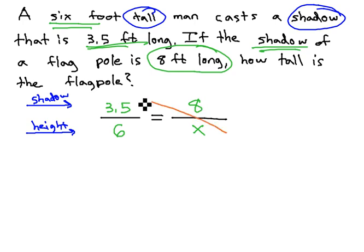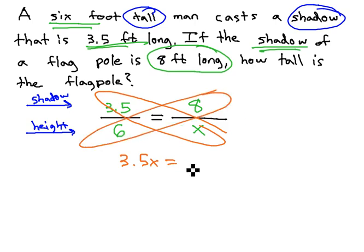We can solve this proportion quickly by calculating the cross product, 3.5x equals 48. To get the x alone, we'll divide both sides by 3.5, and we find the approximate height of the flagpole is about 13.7 feet tall.